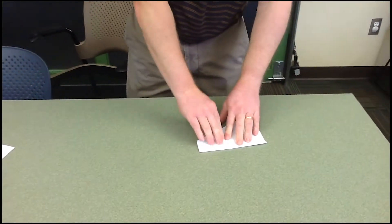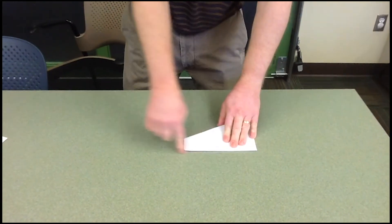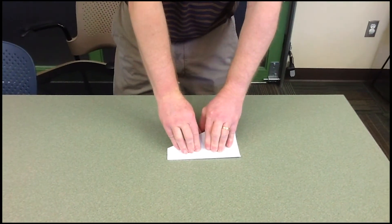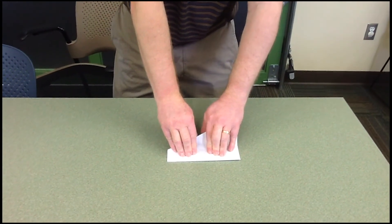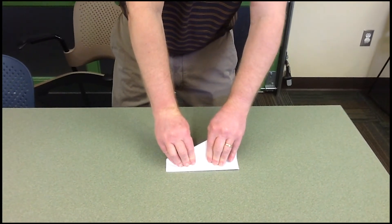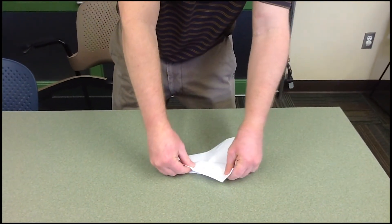Spin it to where the straight edge is away from you. Take both of your hands again like this. And put your thumbs underneath the flap. And then fold down to make the wing.